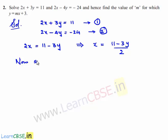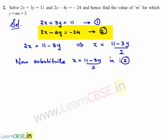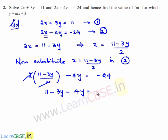Now substitute x equal to 11 minus 3y divided by 2 in equation number 2. In place of x we substitute 11 minus 3y divided by 2, giving 2 times of (11 minus 3y) divided by 2, minus 4y, is equal to minus 24. So 2 and 2 will be cancelled.